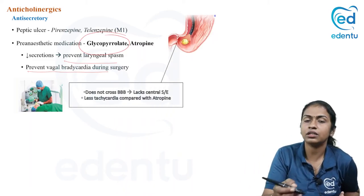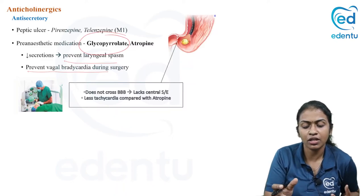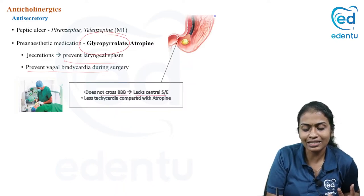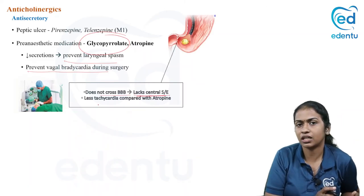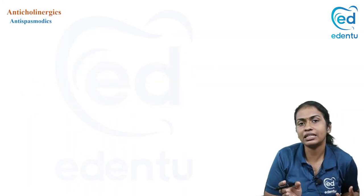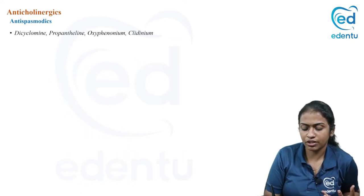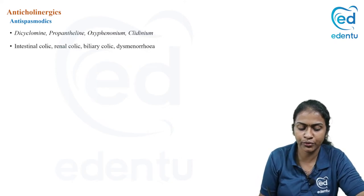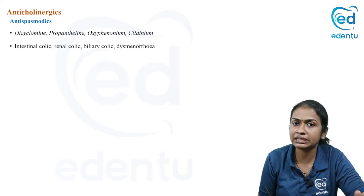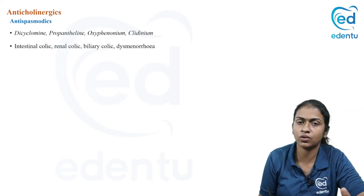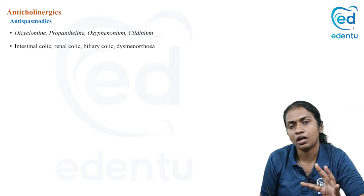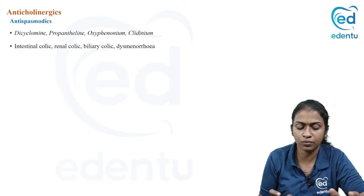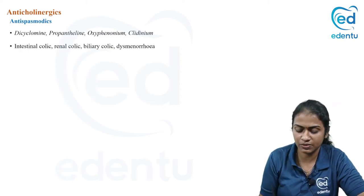Glycopyrrolate is preferred over atropine as a pre-anesthetic agent because it does not cross the blood-brain barrier, lacks central side effects, and causes less tachycardia. Anti-spasmodic agents that reduce smooth muscle spasm include dicyclomine, propantheline, and oxyphenonium. These are given for intestinal colic, renal colic, biliary colic, and menstrual or uterine colic (dysmenorrhea). Valethamate is used for dilatation of the cervix.